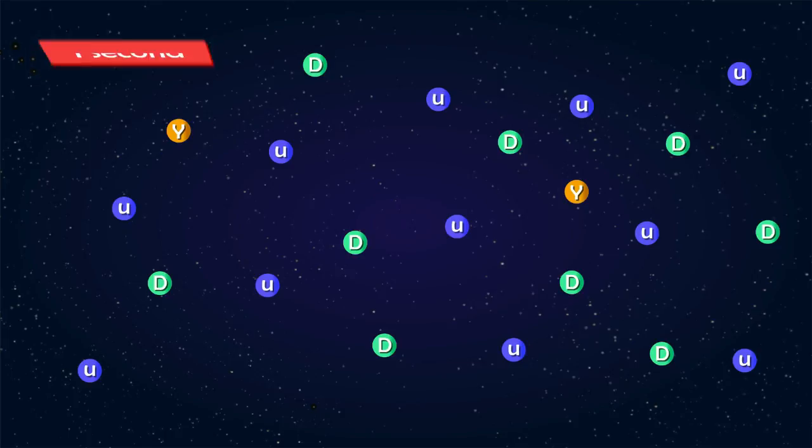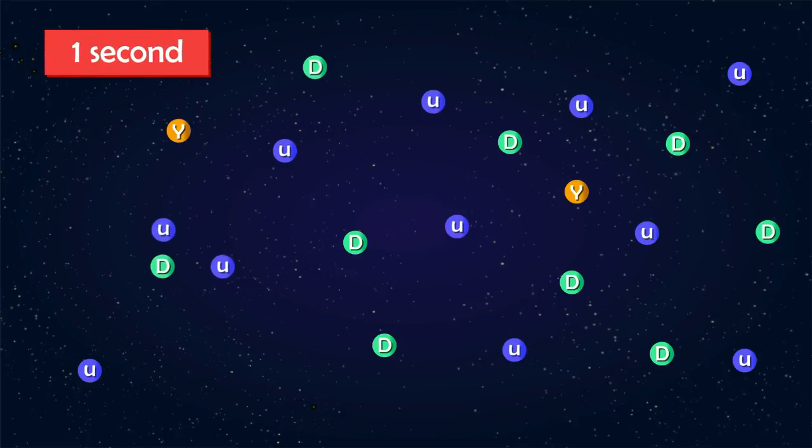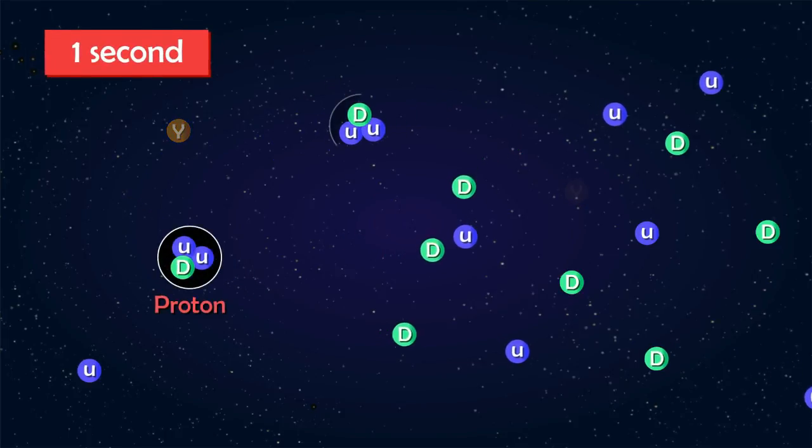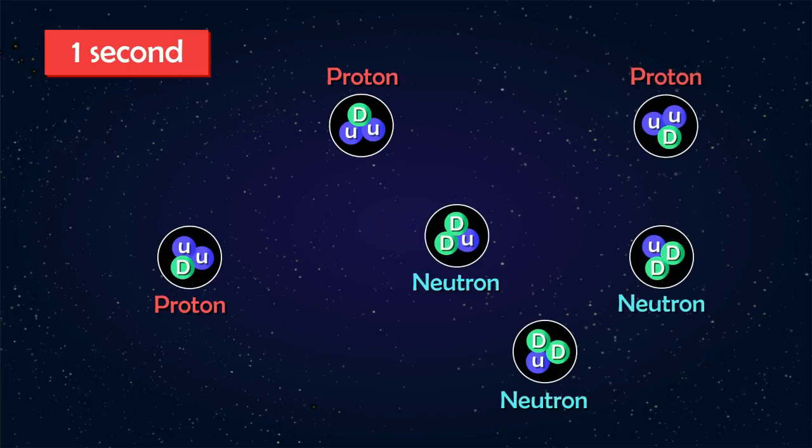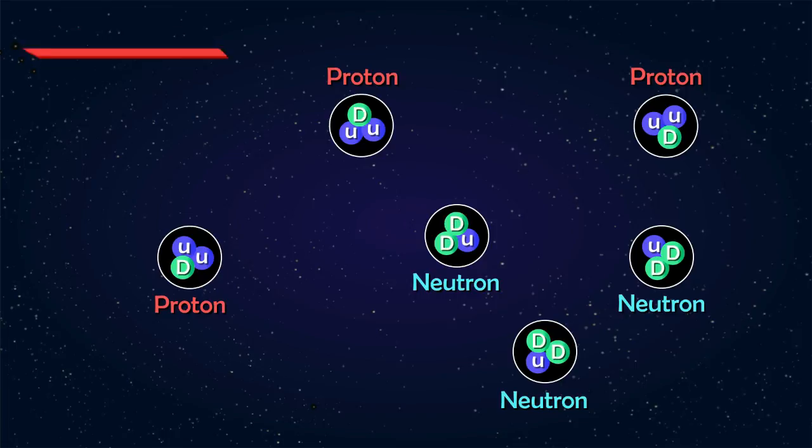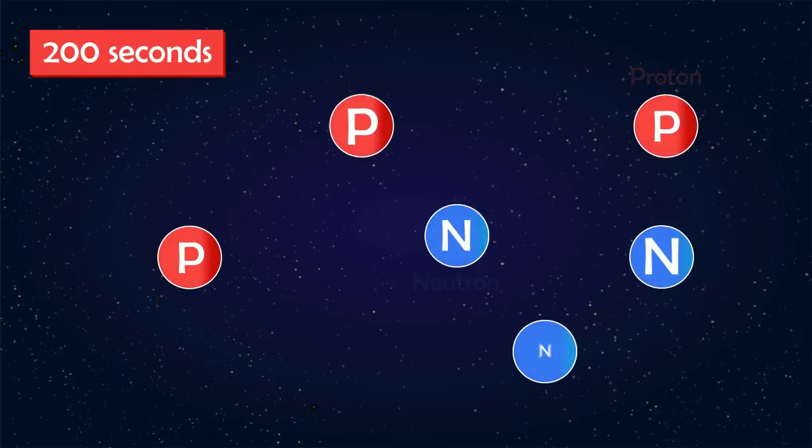One second after the Big Bang, the universe was filled with quarks, electrons, protons, and neutrinos. These particles started smashing together, leading to the formation of protons and neutrons.